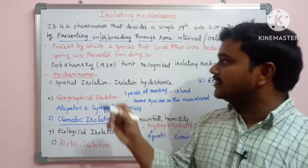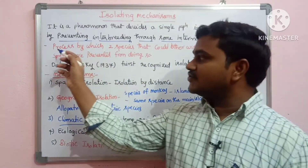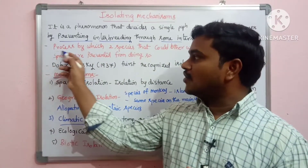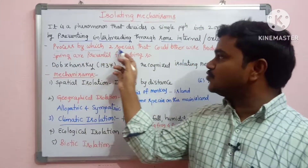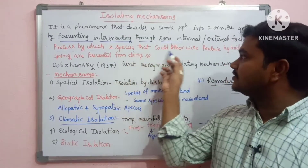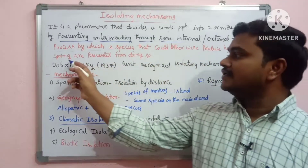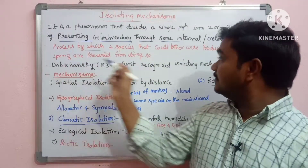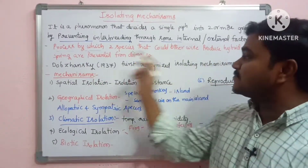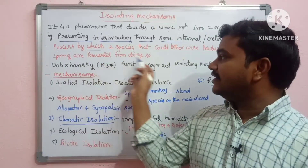First of all, we are going to discuss the process by which two species that could otherwise produce hybrid offspring are prevented from doing so.